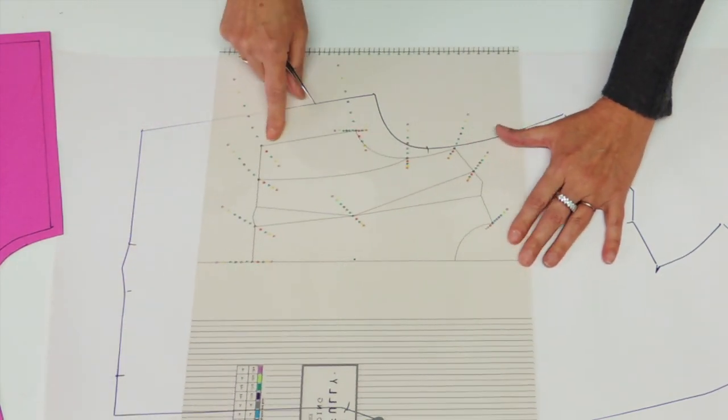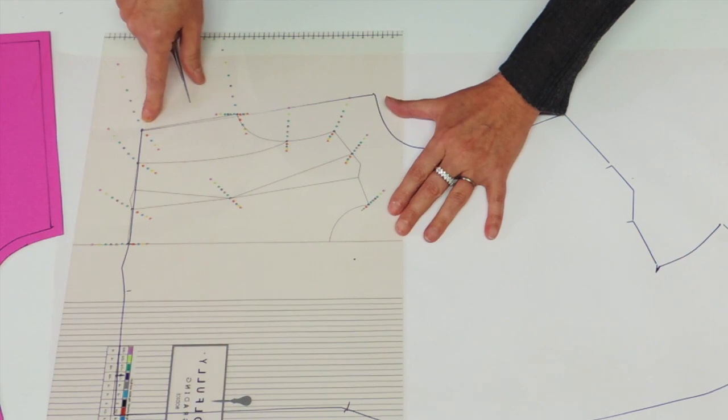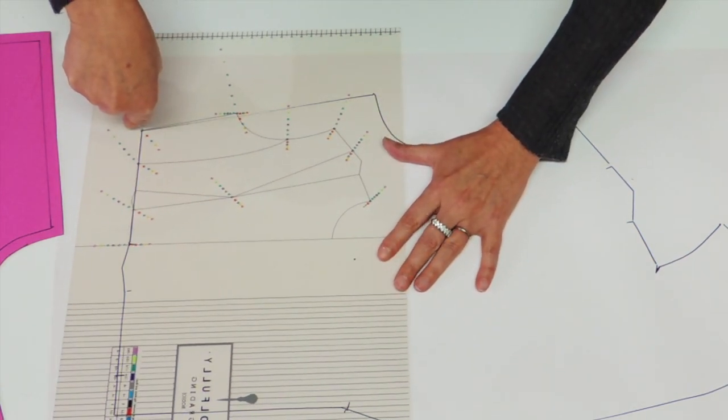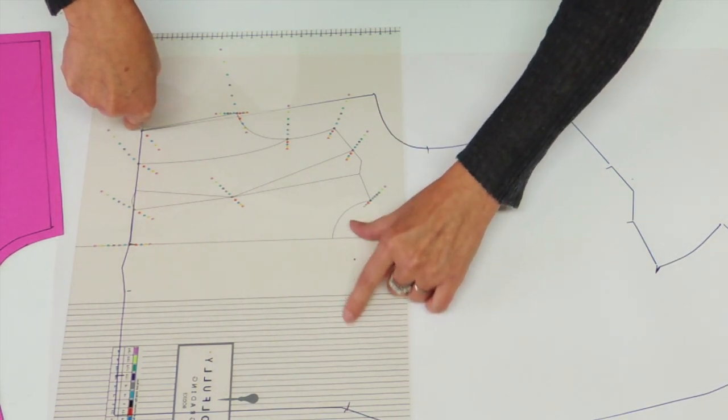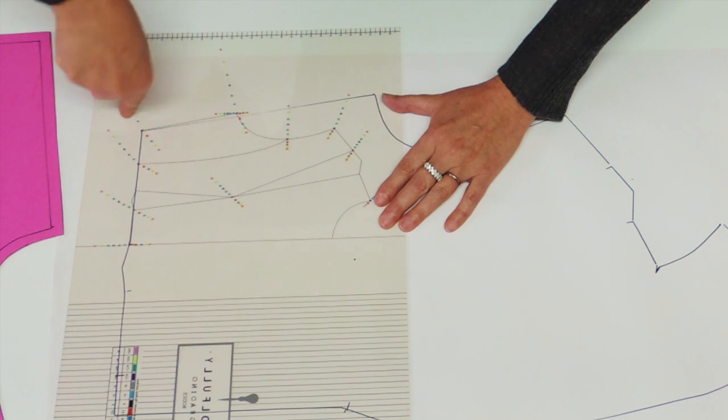Now for the side seam, I'm going to use the side seam point here. Again, put the black one right on the drawing, pivot until your grain line is parallel to one of the lines on the ruler and point out the size that you want.